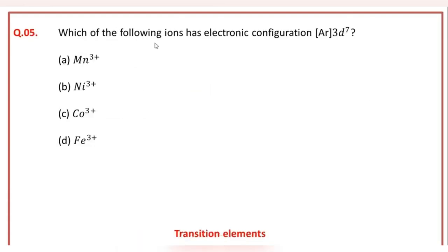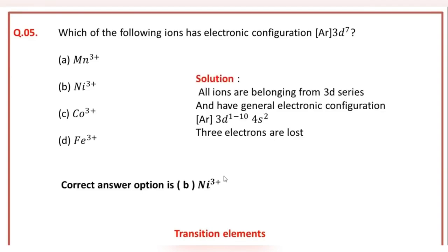Which of the following ions has electronic configuration argon 3D7? The correct answer option of this question is B.